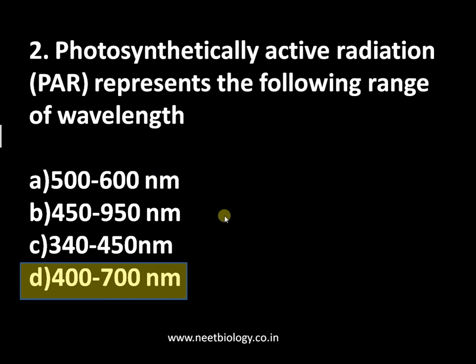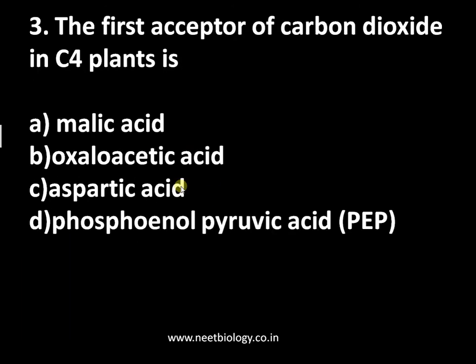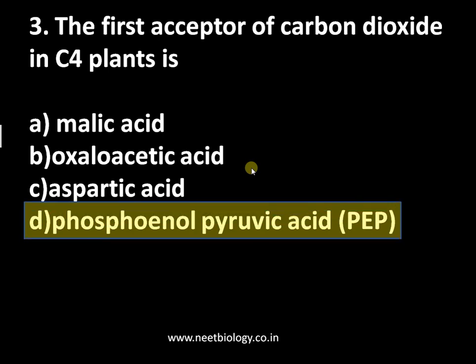Question number three: the first acceptor of carbon dioxide in C4 plants is — options are: A: malic acid, B: oxalic acid, C: aspartic acid, and D: phosphoenolpyruvate. The enzyme involved is PEP carboxylase, so the acceptor is phosphoenolpyruvate, a three-carbon compound. It combines with CO2 forming a four-carbon compound, oxaloacetic acid — that is why the cycle is called the C4 cycle. The answer is phosphoenolpyruvic acid.